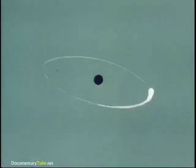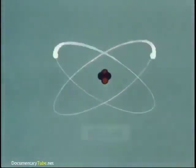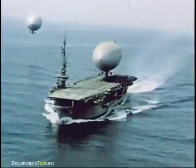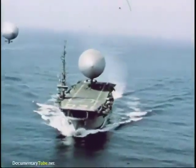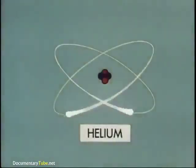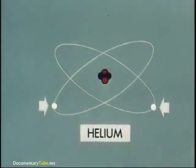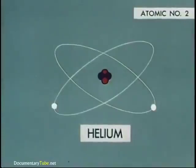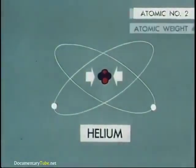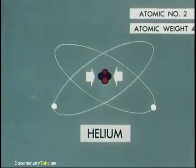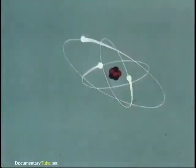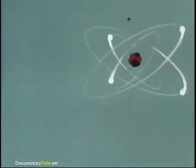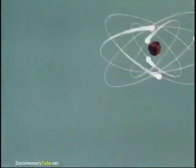One rung above hydrogen on the ladder of elements is helium. One of the uses for helium you're probably familiar with is in lighter than air craft. A helium atom has two electrons and a nucleus composed of two protons plus two neutrons. So helium has the atomic number two, same as the protons which it possesses, and an atomic weight of four, its protons plus neutrons. Going up the ladder, we find elements with atoms that become progressively complicated, with more electrons and increased numbers of protons and neutrons in their nuclei.